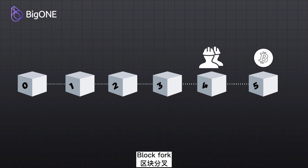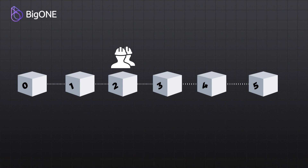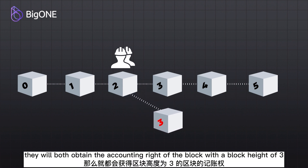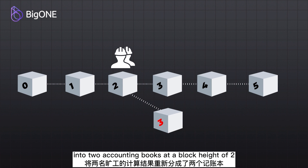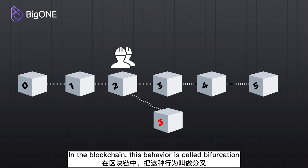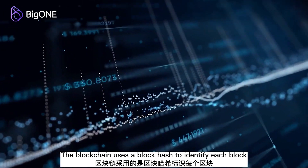Block fork: when two miners solve the calculation problem at the same time, they will both obtain the accounting right of the block with a block height of three. This is equivalent to dividing the calculation results into two accounting books at a block height of two. In the blockchain, this behavior is called bifurcation.